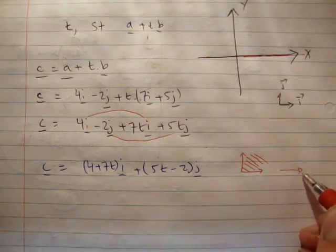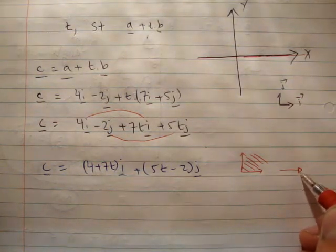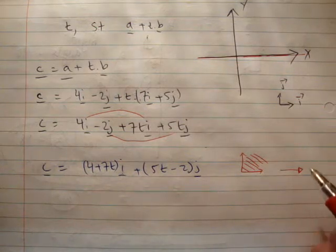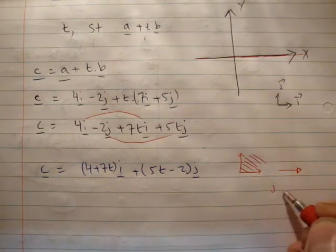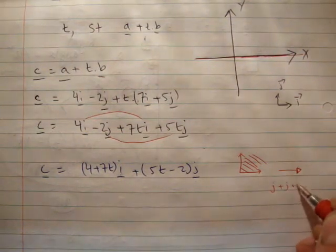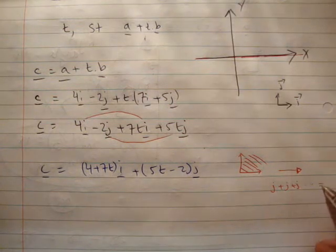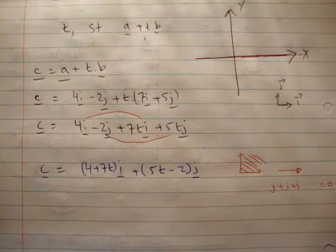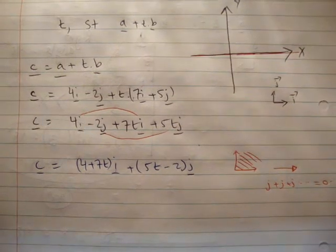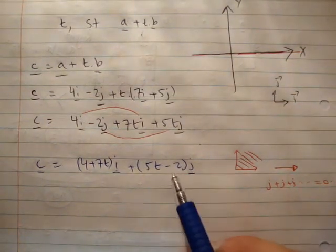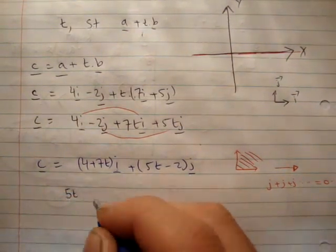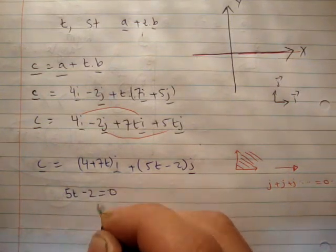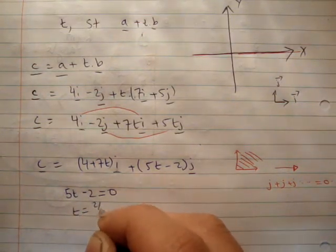But we want it only to live in the x-dimension or the x-axis, only to have one of those, which means all the j's, j plus j plus j, equal 0. Alright? So, that means this here, 5t minus 2 is equal to 0, t is equal to 2 fifths.